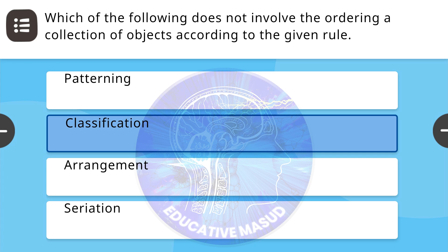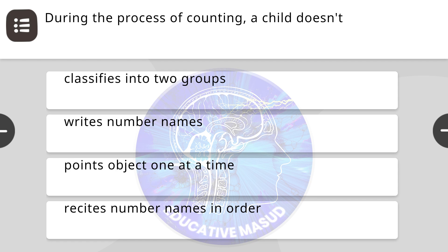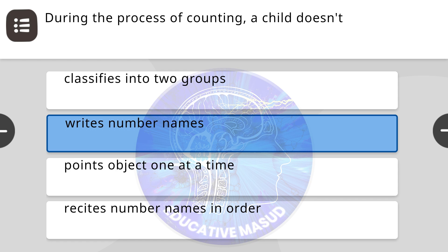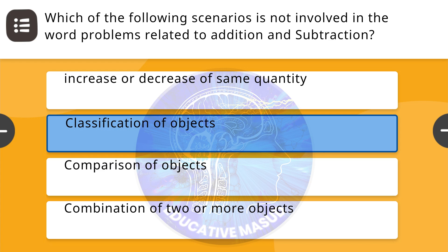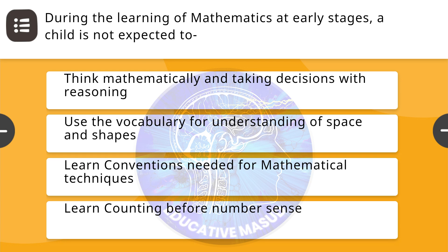Next question: how many times should we add 4 to get 16? Correct answer is four times. Next question: which of the following does not involve the ordering of a collection of objects according to the given rule? Correct answer is classification. Next question: during the process of counting, a child does not? Correct answer is write number names.